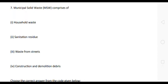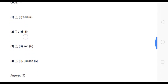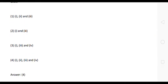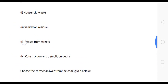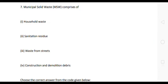Next question: municipal solid waste comprises of what? Options: one, household waste; two, sanitation residue; three, waste from streets; four, construction and demolition debris. The correct answer is option four — all four are correct. Municipal solid waste comprises of household waste, sanitation residue, waste from streets, and construction and demolition debris.